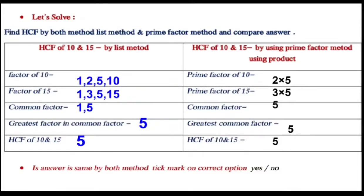Factor of 15 is 1, 3, 5 and 15. Here the common factors are 1 and 5. So the greatest factor is 5.